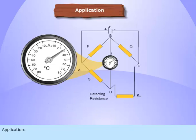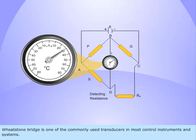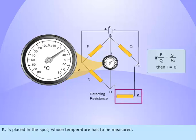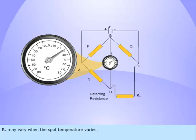Application. Wheatstone bridge is one of the commonly used transducers in most control instruments and systems. Assume that the bridge is used in temperature measurement. Rx is placed in the spot whose temperature has to be measured. Rx may vary when the spot temperature varies.